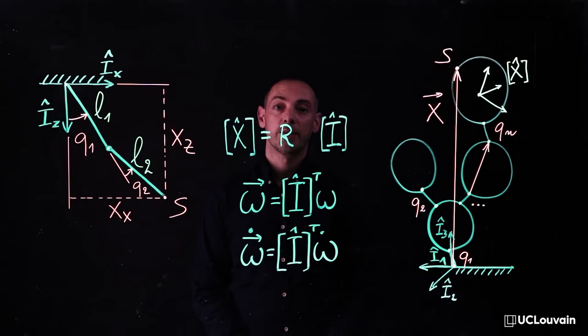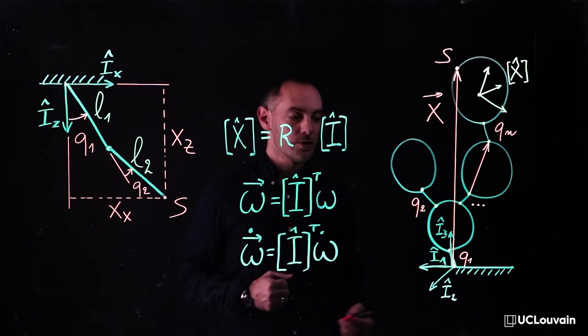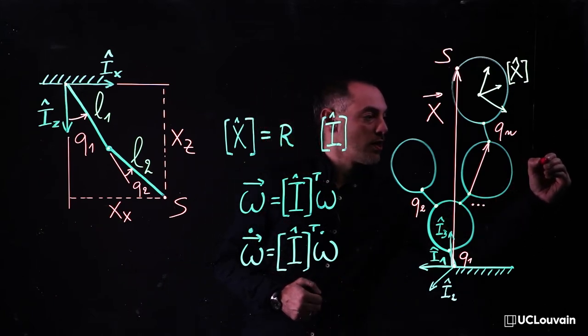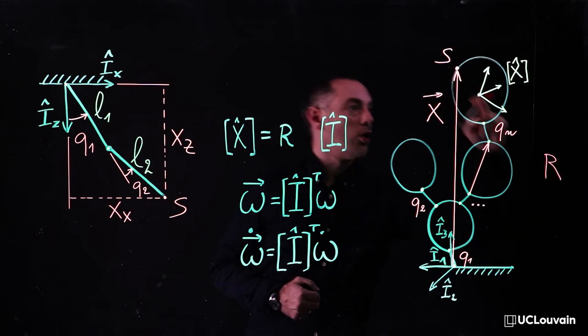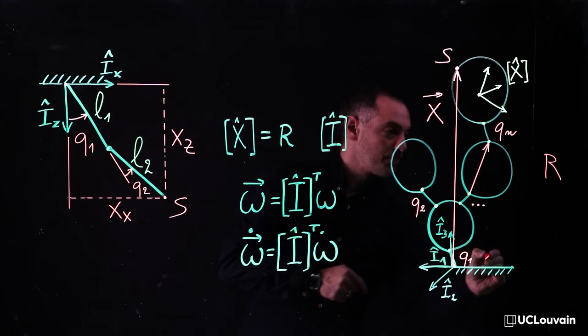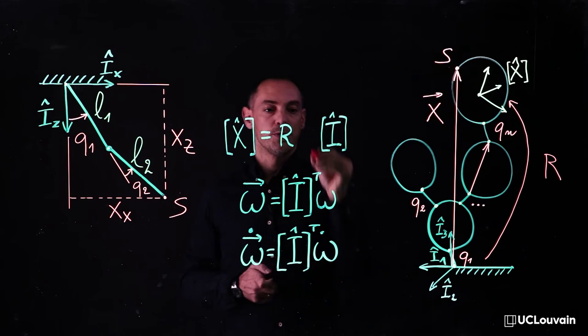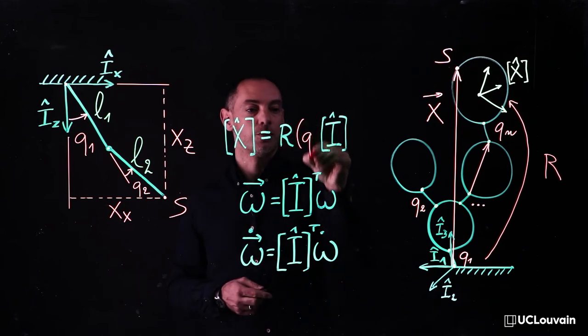The direct kinematics also deals with absolute rotation quantities. That is to say, first, the rotation matrix r of this body frame, with respect to a reference frame. Here, r is computed as a function of q.